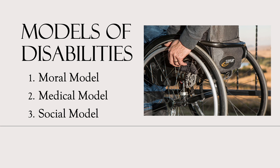The second model is the medical model. This is probably the model that most people default to. A disability is something that is diagnosed by a medical professional. Our children were considered disabled once they received an official diagnosis from a developmental pediatrician. If you search online for disabilities, you'll find lists of diseases or injuries that are considered disabilities. This makes medical professionals the gatekeepers of disability. You can walk into a doctor's office as an abled person and walk out after getting a diagnosis of diabetes and identify as disabled.